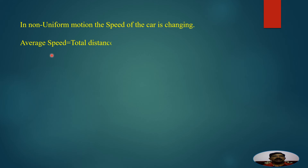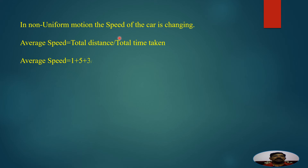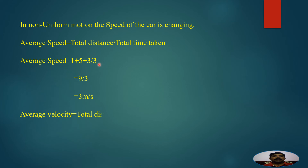In the previous example, the average speed of the vehicle equals 1 + 5 + 3 = 9 meters, divided by the total time of 3 seconds, giving 3 meters per second. The concept of average speed is used in the case of non-uniform motion.